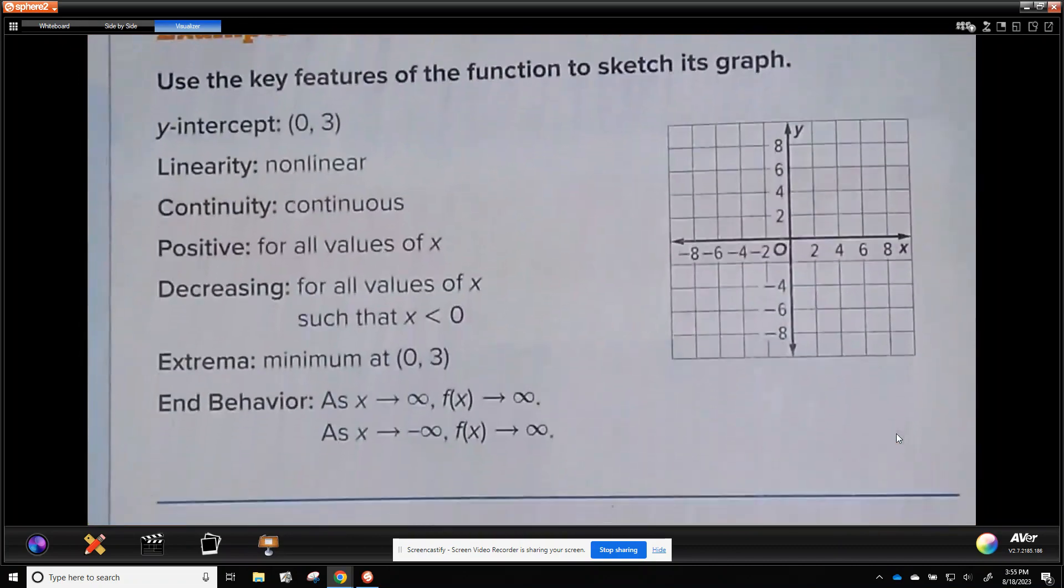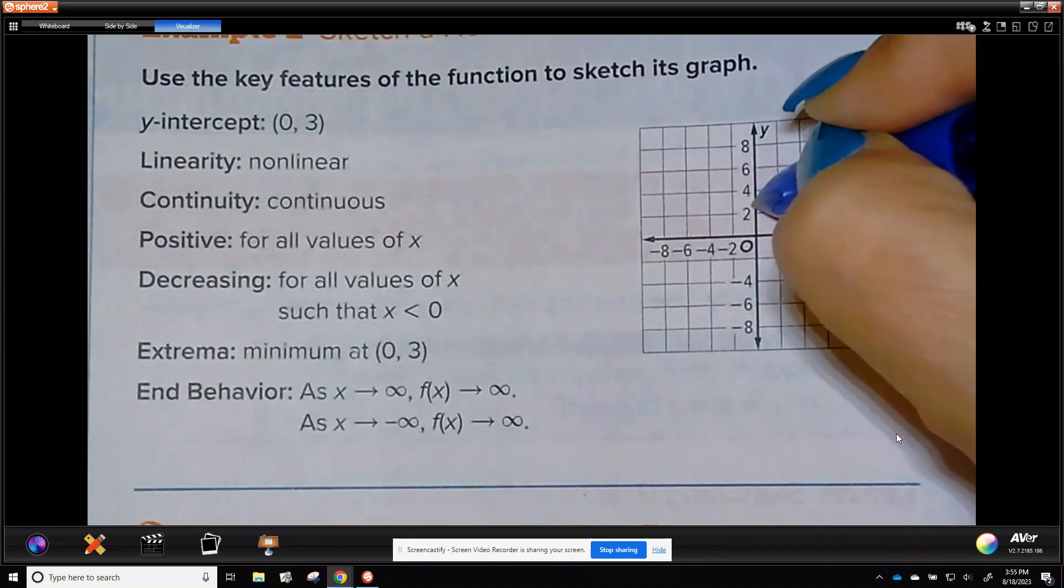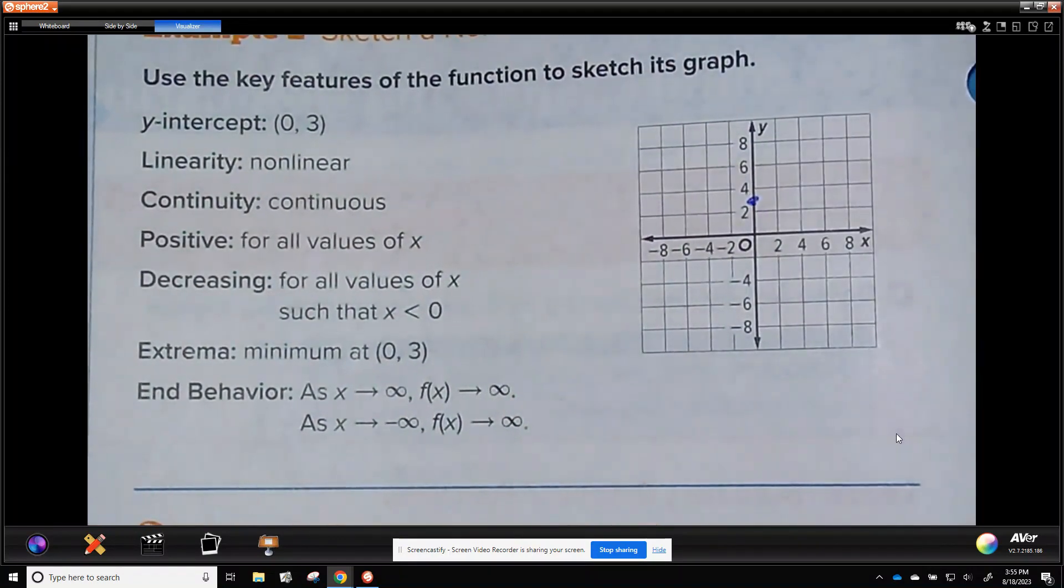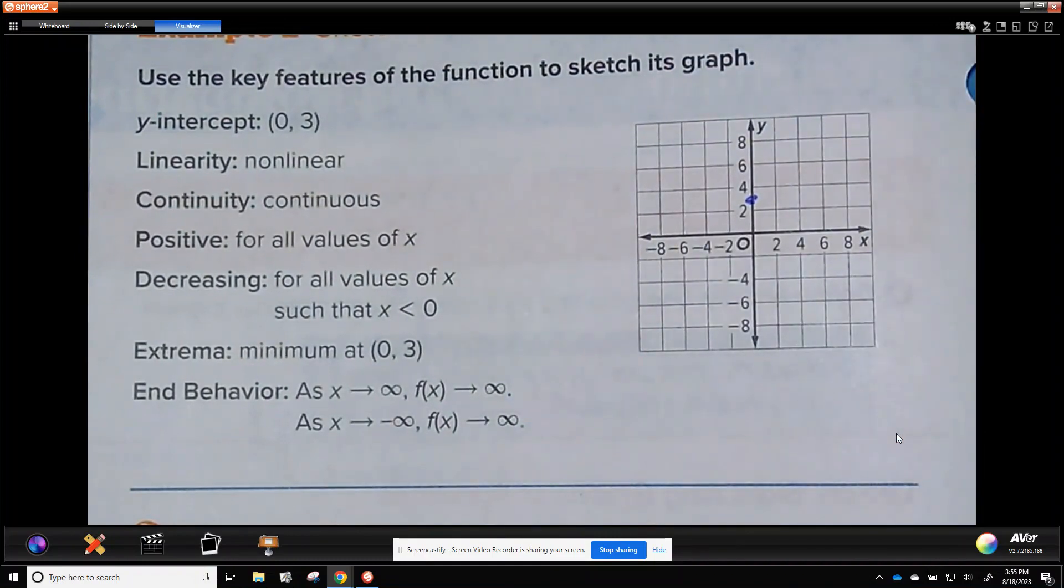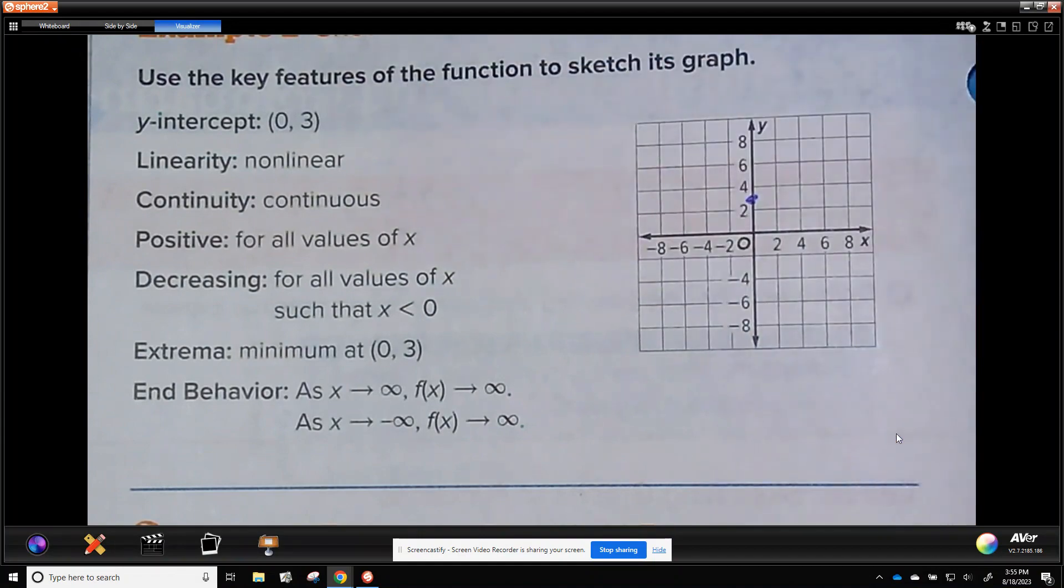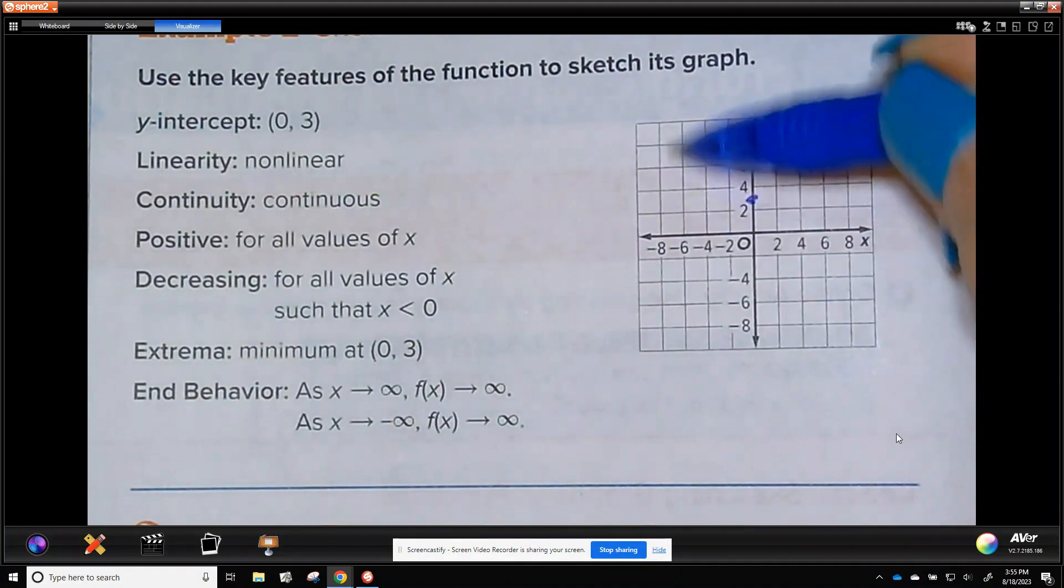So let's do one now that's not drawn for us. So we have a y-intercept of 0, 3. 3 is between 2 and 4. It is non-linear so it's not a straight line. Remember that you only need two points to draw a straight line. It is continuous so it's all connected. It is positive for all values of x so it's just all going to happen up here.